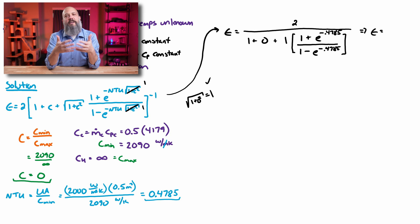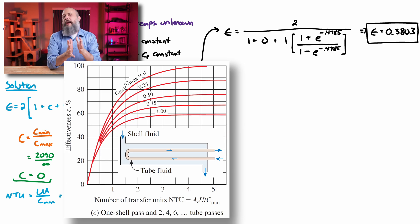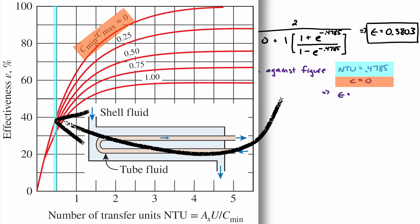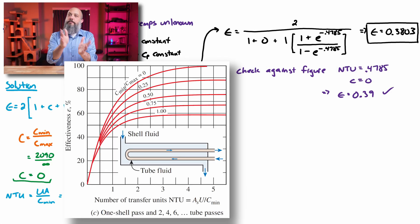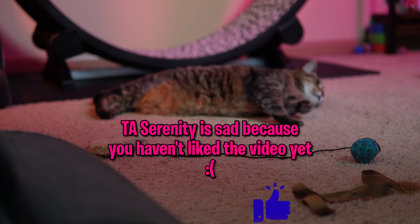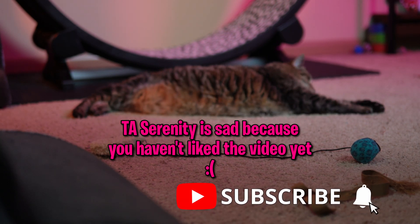Let's compare this against a figure. Your textbook probably has a figure for effectiveness as well, which you can look up if you know NTU and capital C. In my figure, it looks like about 0.39. That's pretty close to the 0.38 we got from the equation. I'm not going to use the figure because the equation is way more accurate. I'm only looking at the figure to make sure I didn't make any calculator mistakes.